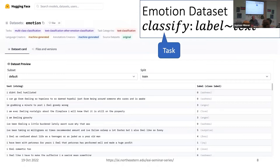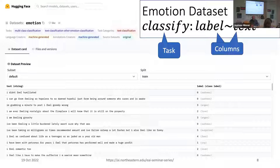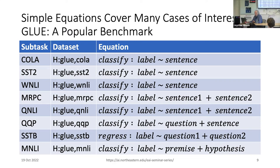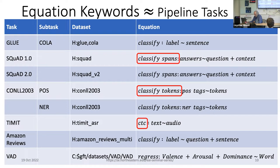Here's what the equations look like — it has a task, say classification, and then references to some columns. You may have heard of GLUE — it's a standard benchmark everyone talks about. This is basically the solution to all the GLUE tasks, at least eight of nine, shown on one screen. That's pretty much all you need to do for all the GLUE tasks. Most of the GLUE tasks are classification, but one of them is regression.